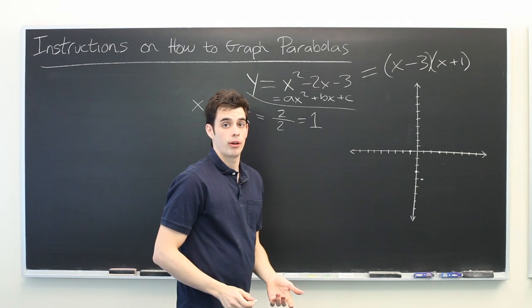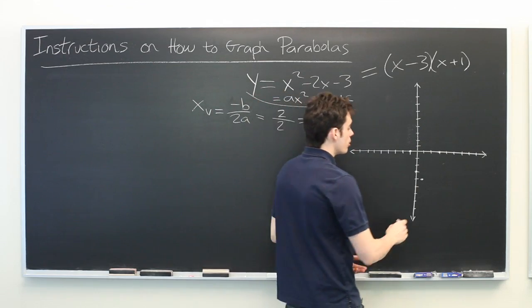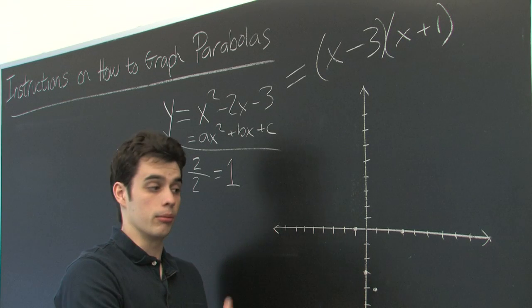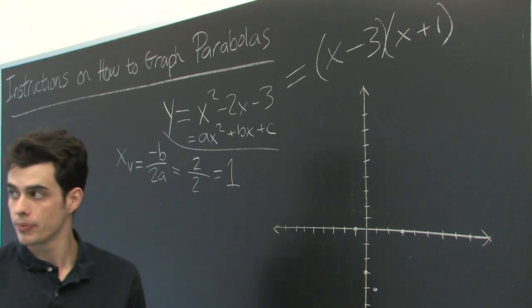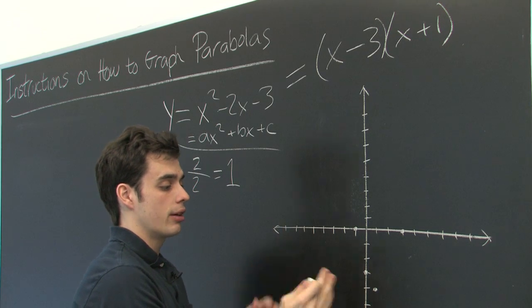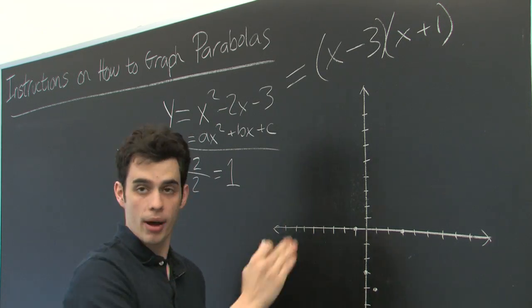Now one trick that you can do when you're graphing a parabola: if you already know where the vertex is and you have one point that's on the left side of it, for example, well we can see here that this point is one unit to the left of the vertex and one unit above it.